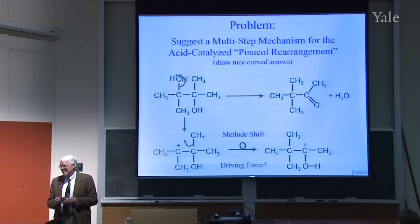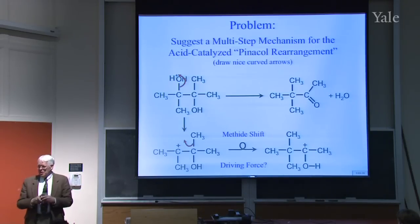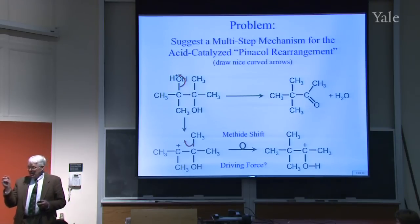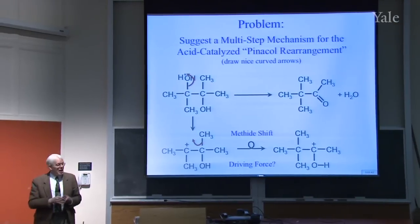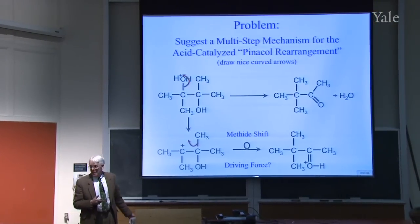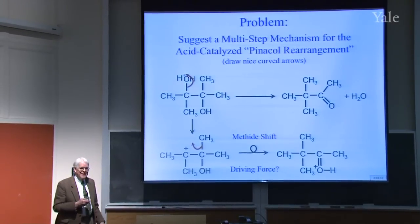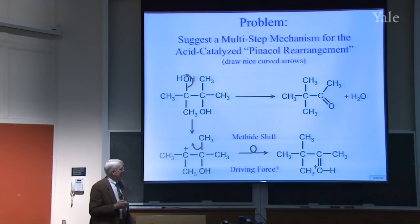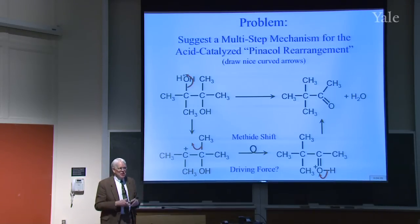What about the unshared pair? The electrons get stabilized by mixing with the low vacant orbital associated with the positive charge—it's the electrons that get lower in energy. So you can draw a resonance structure like that. That's why it's good to go to the right. Now how do you get from there to the product? You just lose a proton, and you've got the product.